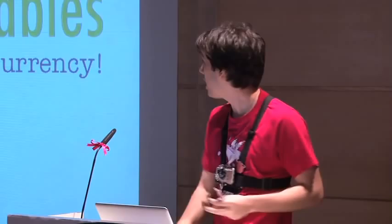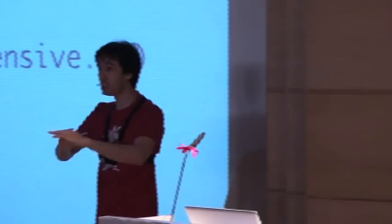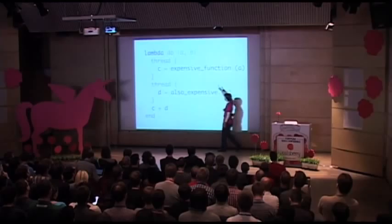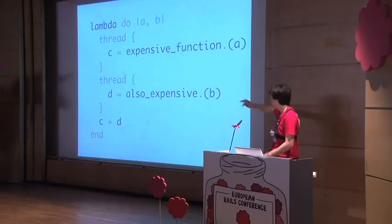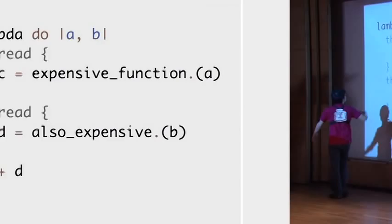Imagine you have the same code with expensive function calls. I want to calculate those in a thread, so I just put a thread block — and that's it. I don't need to change anything else in my code; it's going to work and use my cores. In regular Ruby we'd have to call thread join, keep a pointer to the thread, get the value — but here, no. Since the code is deterministic, the compiler can make guesses for us.